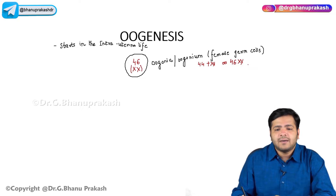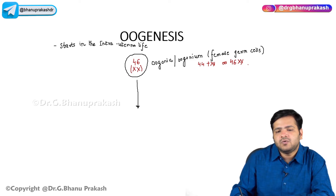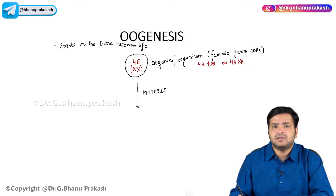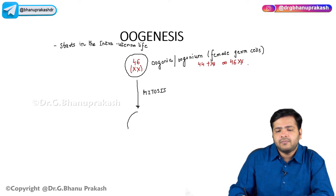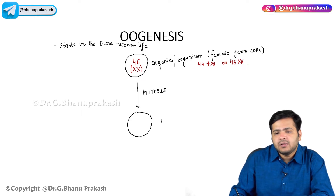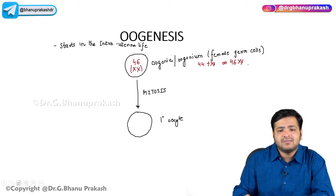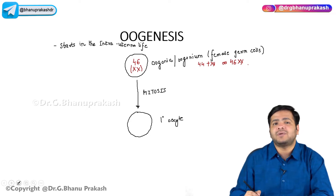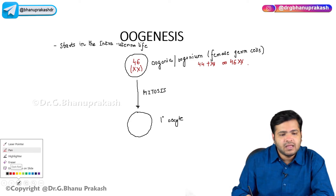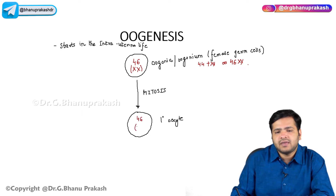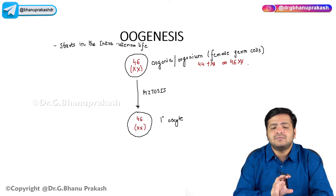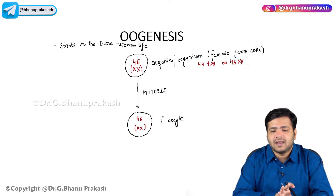The oogonia will undergo mitosis, which is an equational division, so the number of chromosomes will remain the same. This oogonia will form the primary oocyte, which will also have 46XX chromosomes. This is happening in intrauterine life — when the female is in the womb of the pregnant woman.